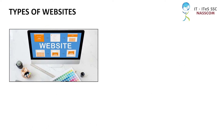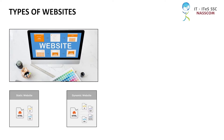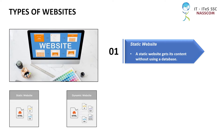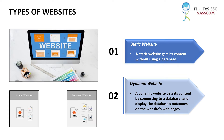Websites are classified into two types: static and dynamic. A static website gets its content without using a database, whereas a dynamic website gets its content by connecting to a database and displays the database's outcomes on the website's web pages.